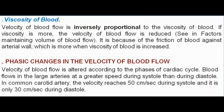Viscosity of blood: Velocity of blood flow is inversely proportional to viscosity. If viscosity is more, velocity of blood flow is reduced, due to friction of blood against the arterial wall. Phasic changes in velocity: Velocity of blood flow is altered according to the phases of the cardiac cycle. Blood flows in large arteries at greater speed during systole than during diastole. In the common carotid artery, velocity reaches 50 cm/sec during systole and only 30 cm/sec during diastole.